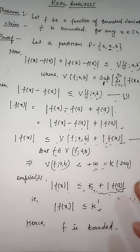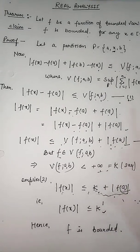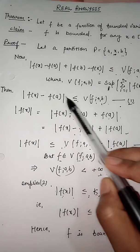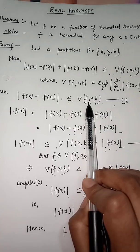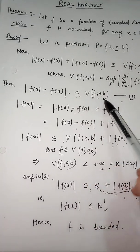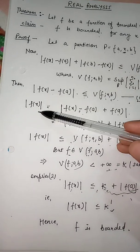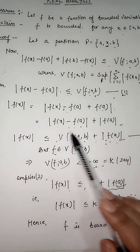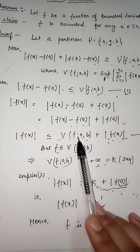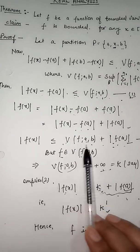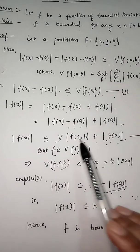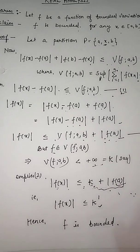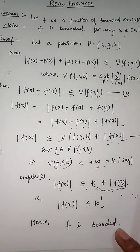To summarize: the key step is that |f(x) - f(a)| ≤ V_a^b(f). We then write |f(x)| using the triangle inequality and substitute the bound on |f(x) - f(a)| with V_a^b(f) to get a finite upper bound. This proves that a function of bounded variation is bounded.